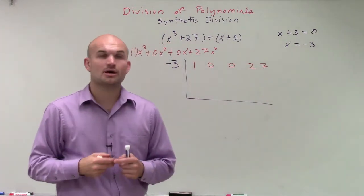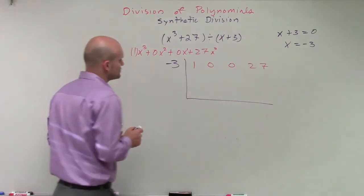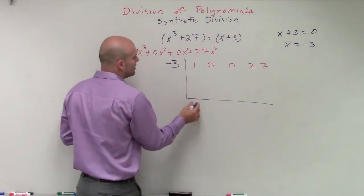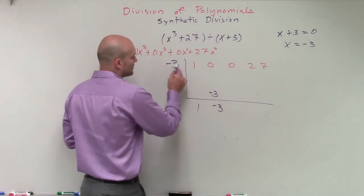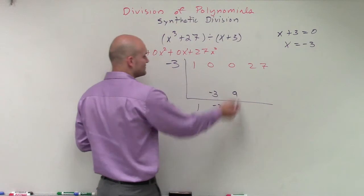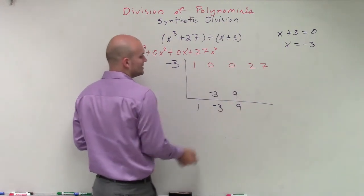So now let's go and apply our synthetic division algorithm. So I first bring down the 1, then I do 1 times negative 3, which is negative 3. Add vertically, which is negative 3. Negative 3 times negative 3 is going to be positive 9. Add vertically, I get 9.